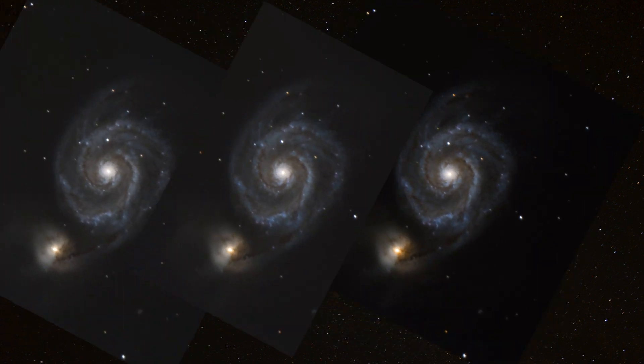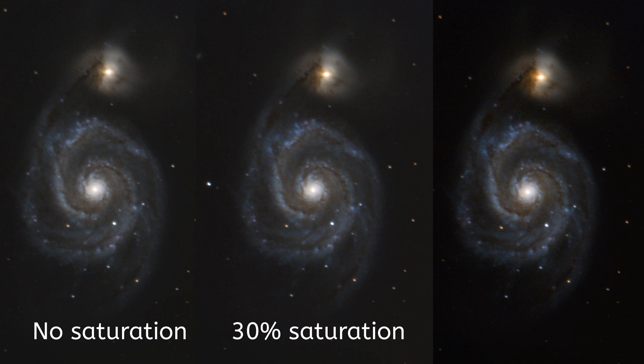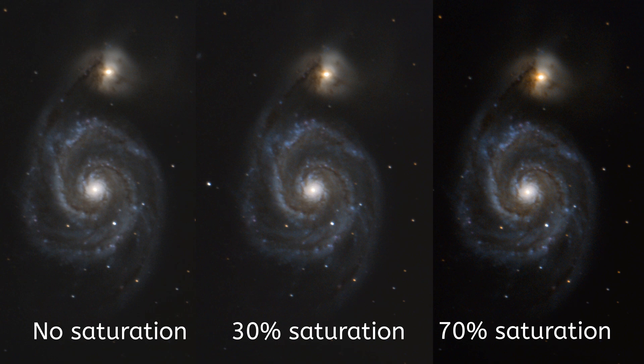I actually made quite a few final images, as you can see right now. One has no saturation at all. The next one has a saturation of 30% — you can clearly see that the colors are a lot more present. I also exaggerated and used a saturation of 70%, which gave me this picture right here. I think everyone has to decide for themselves which one they like most. For me it is the second one, because the first one's colors are pretty hard to see, and the third one has a lot of noise at 70% saturation.